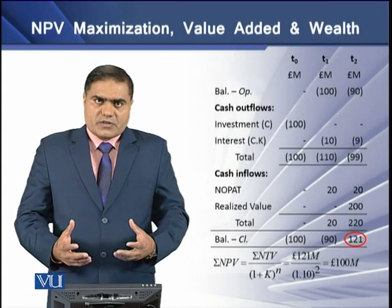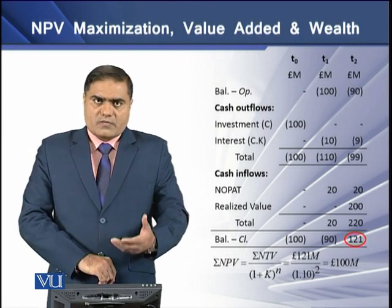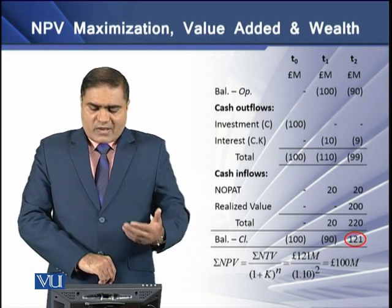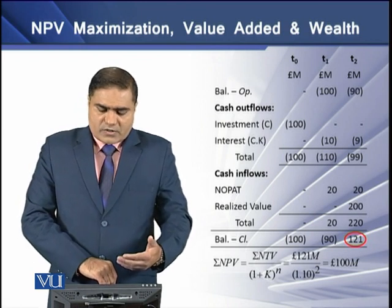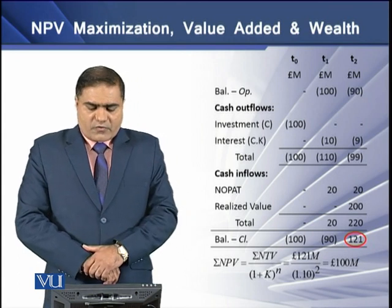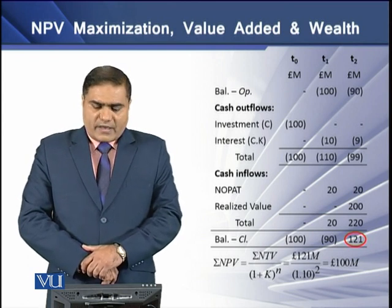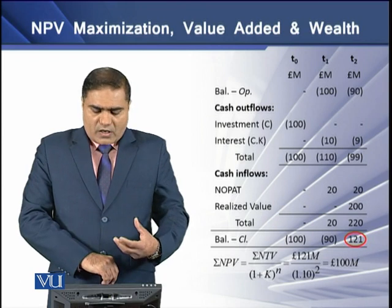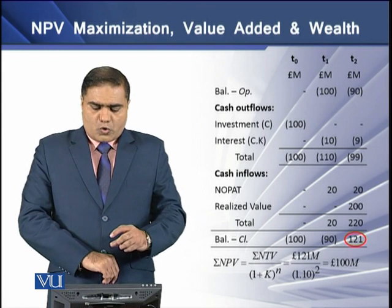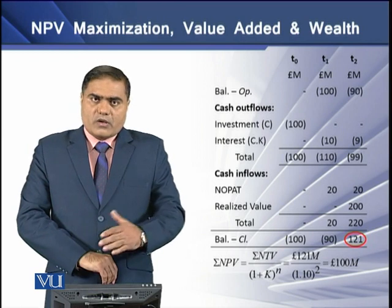To develop this relation we have another exercise with three time periods: T0 (current), T1, and T2. There is no opening balance at time T0. For cash outflows at T0 we have an investment of 100 million, so at the end of time period T0 we have a total cash outflow of 100 million, with no residual or closing balance and no residual value.